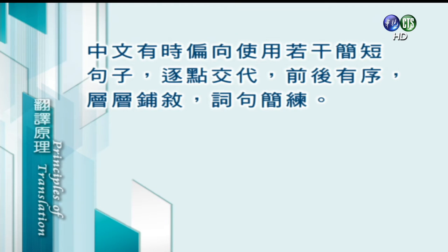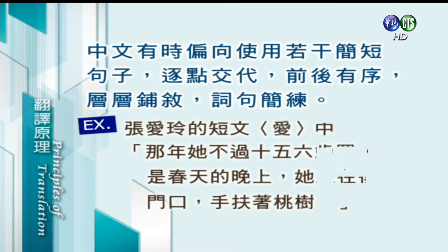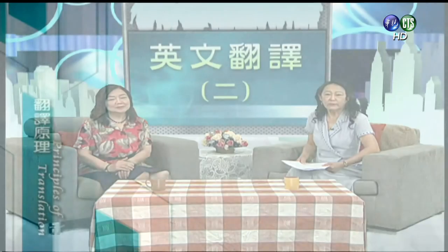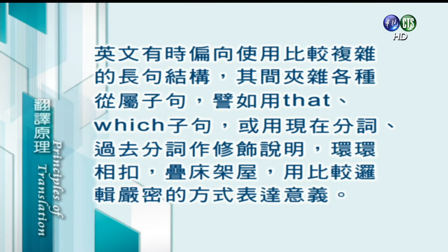中文与英文基本句型不尽相同。在表达一些比较复杂的概念的时候，中文有时候偏向使用若干简短句子，主点交代，前后有序，层层铺序，词句简练。譬如张爱玲的一篇短文《爱》当中就有这么一段文字：那年她不过十五六岁吧，是春天的晚上，她立在后门口，手扶着桃树。这是中文的散文形式，层层铺序，主点来交代。而英文有时偏向使用比较复杂的长句结构，其间夹杂各种子句，譬如 that, which 子句。